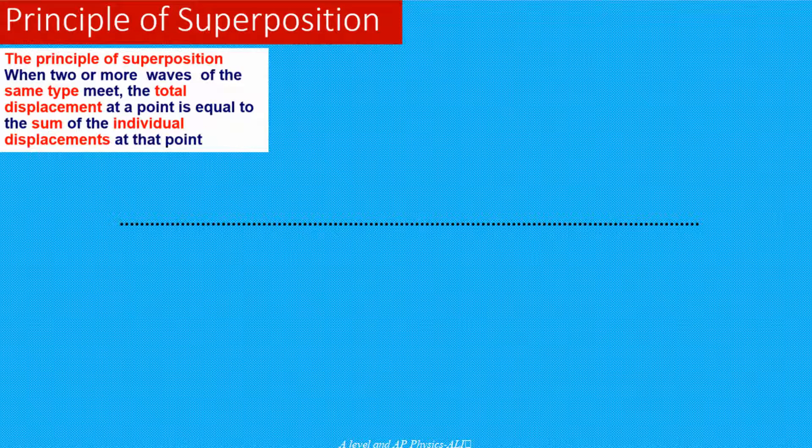First of all, let's try to understand what is Principle of Superposition. Principle of Superposition is a very simple principle. We can use this one to add two or more waves, but waves have to be of the same type, and then the total displacement at any point will be equal to the sum of the individual displacements at that point.